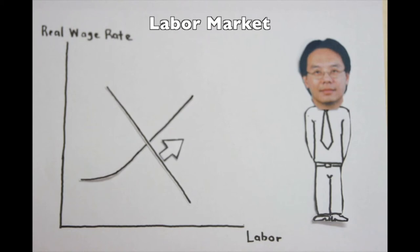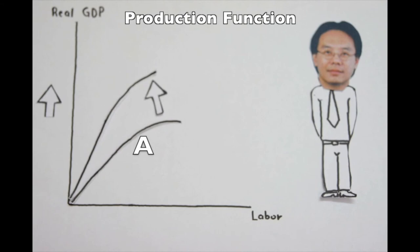The labor demand curve shifts from LD0 to LD1. As the equilibrium quantity of labor increases, potential GDP shifts from point B to point C. So an increase in labor productivity increases potential GDP for two reasons. Labor is more productive and more labor is employed.